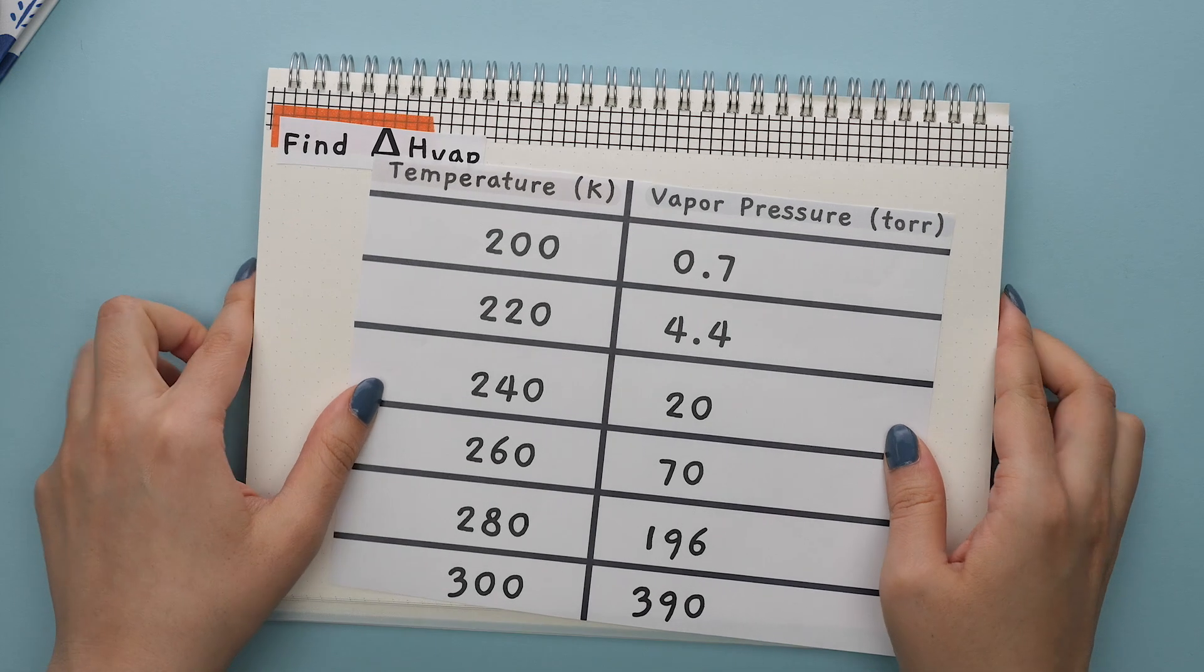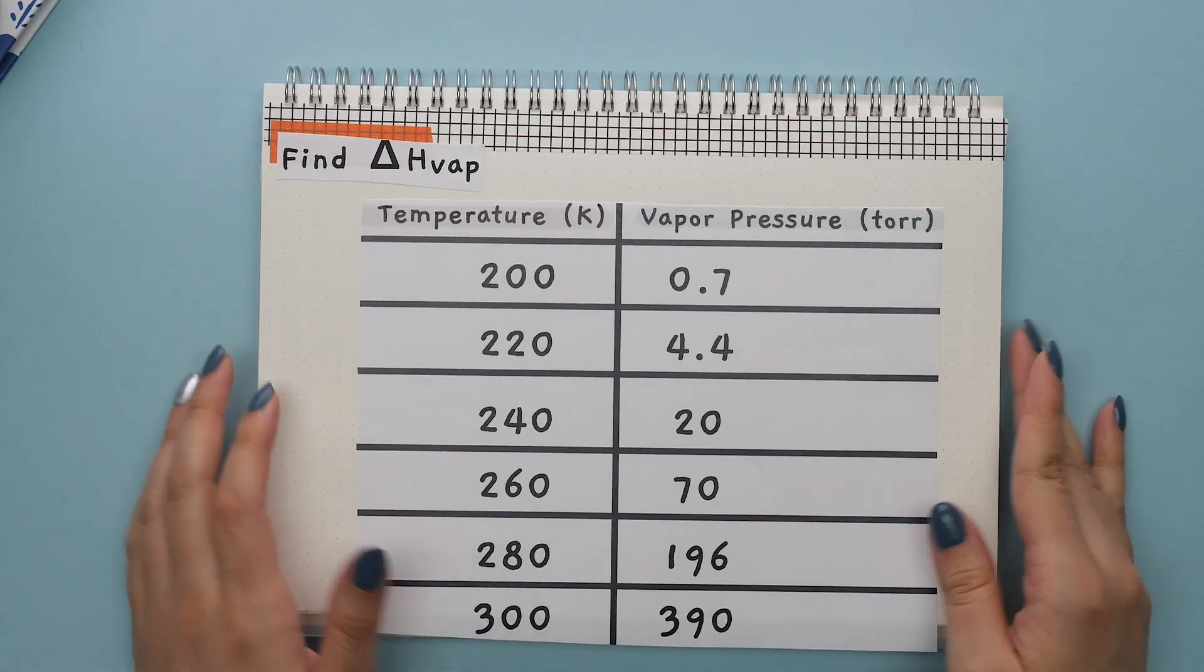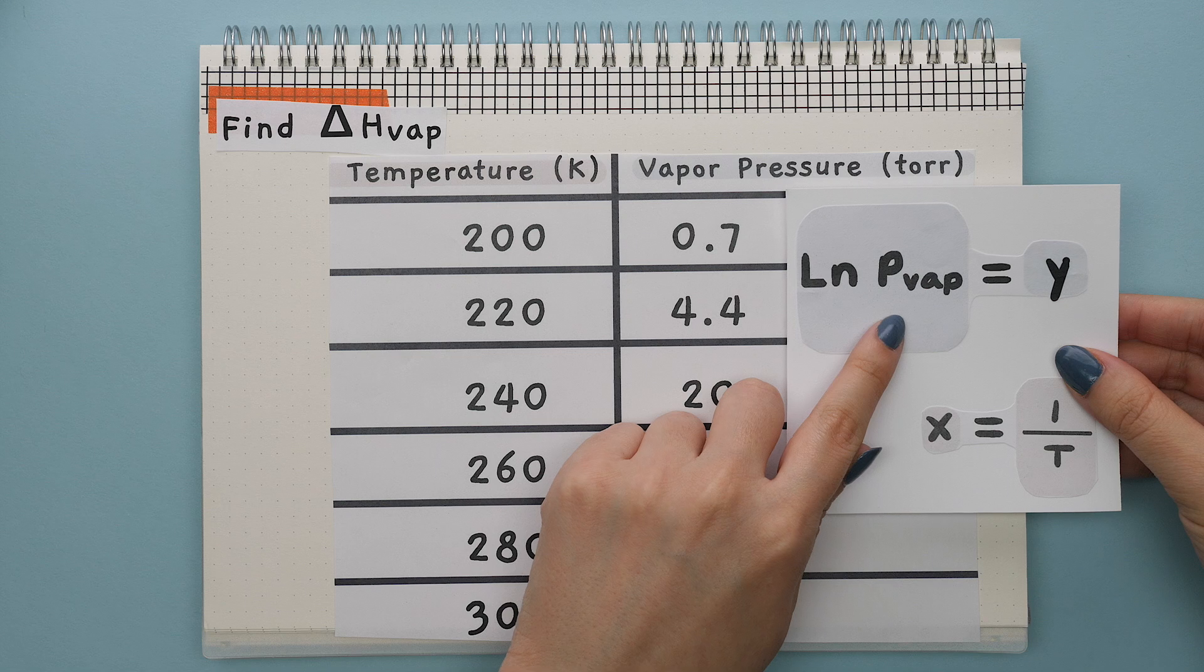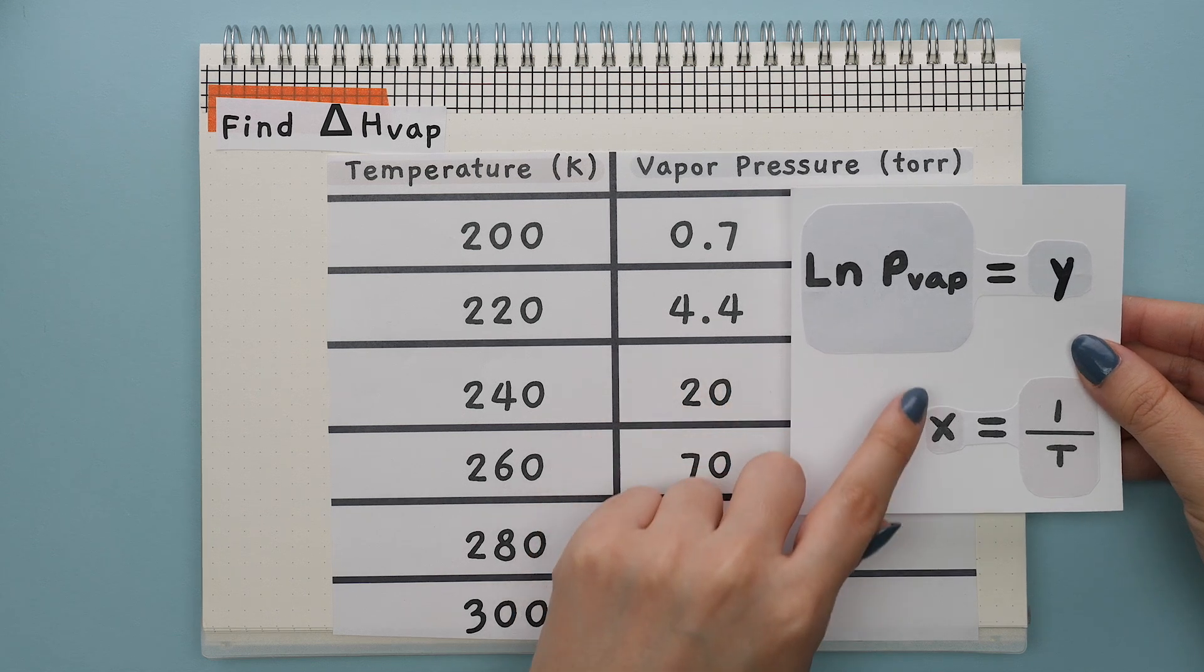Let's say you were asked to find the heat of vaporization, but only were given this data. This is where graphing and determining the equation of your trend line comes in. Since we said that y is equal to ln of p, which is your vapor pressure,